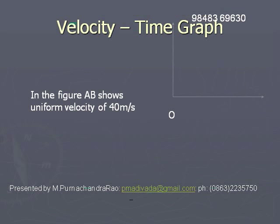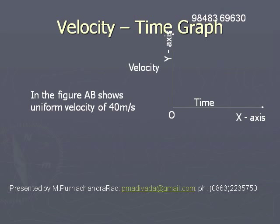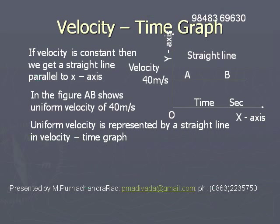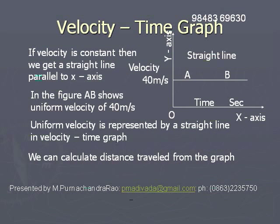Velocity-time graph. We take time on the x-axis and velocity on the y-axis. Suppose the time is taken in seconds and velocity in meters per second. If the velocity is constant, then we will get a straight line graph parallel to the x-axis. For example, if the constant velocity of the body is 40 meters per second, we get a straight line at 40 on the y-axis, parallel to the x-axis. This represents uniform velocity.